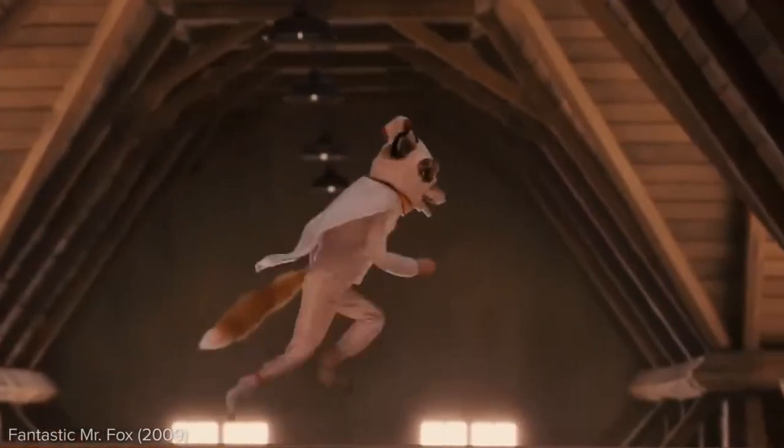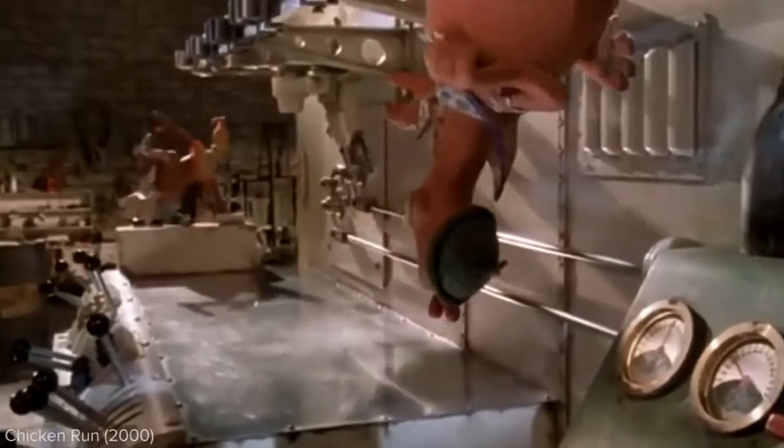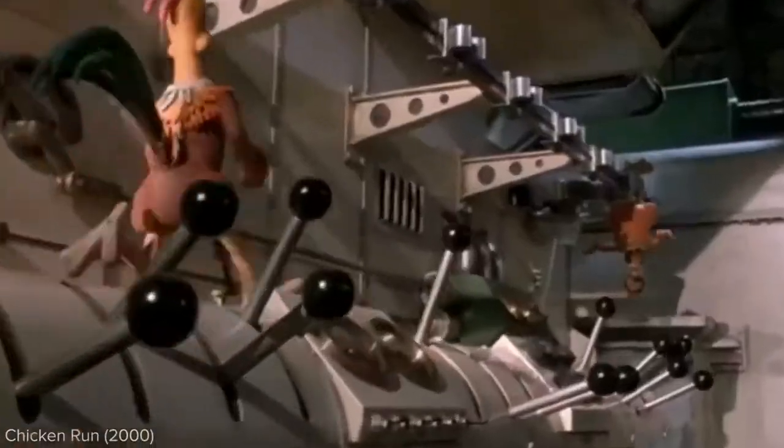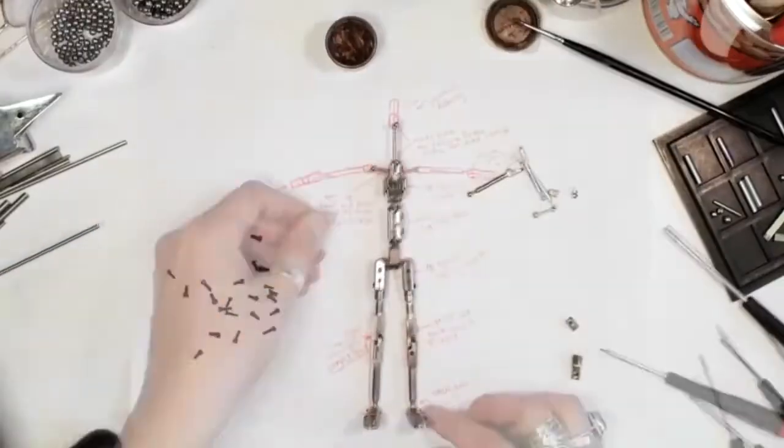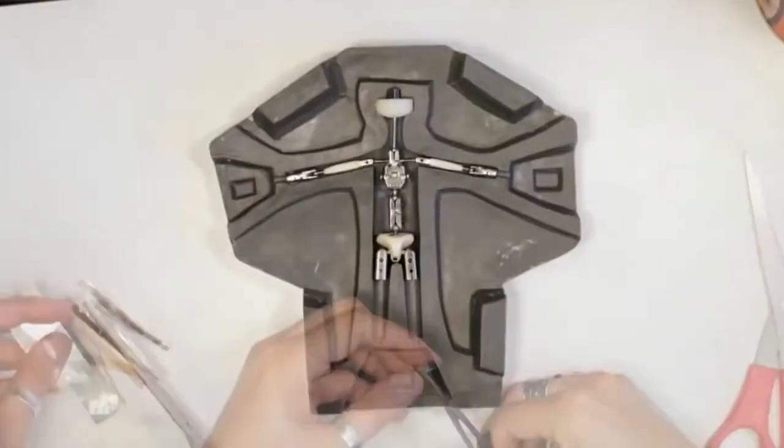Puppets are a little more complicated to animate because they have so many moving parts. A puppet must be flexible but able to hold any pose for an extended period of time. Inside is a strong skeleton made of aluminum wire or specially engineered joints. This is called an armature.